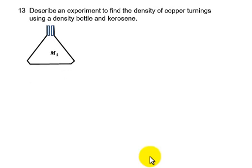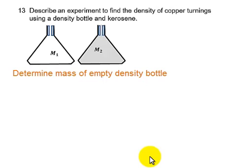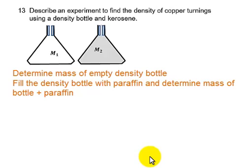In the first step, we determine the mass of an empty density bottle. In the second step, we fill the density bottle with kerosene and find the total mass of the bottle and kerosene.